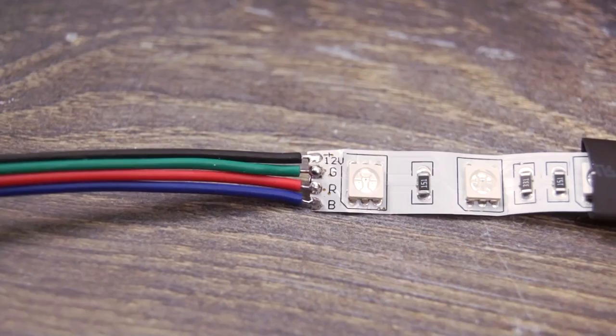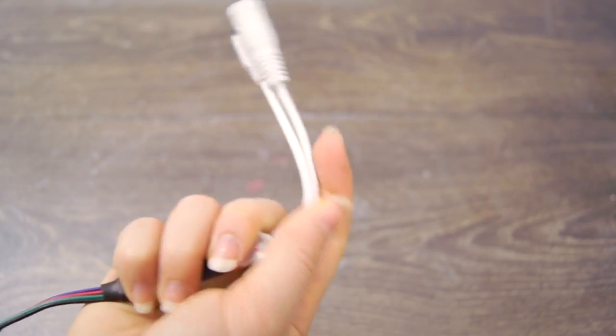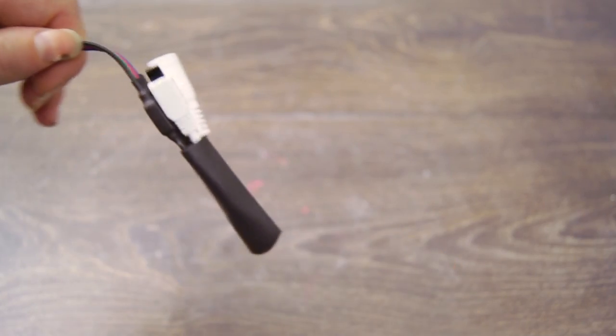We can add one more shrinking tube over the LED strip just to avoid any issues later and make it more durable. I think we can add one last shrinking tube here just to clean up the cable mess a bit.